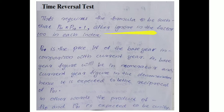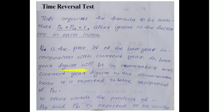After ignoring the factor 100 in each index number, P10 is the price index number of the base year in comparison with the current year. That is, the base year figure will be the numerator and the current year figure in the denominator. Hence, it is expected to be the reciprocal of P01.